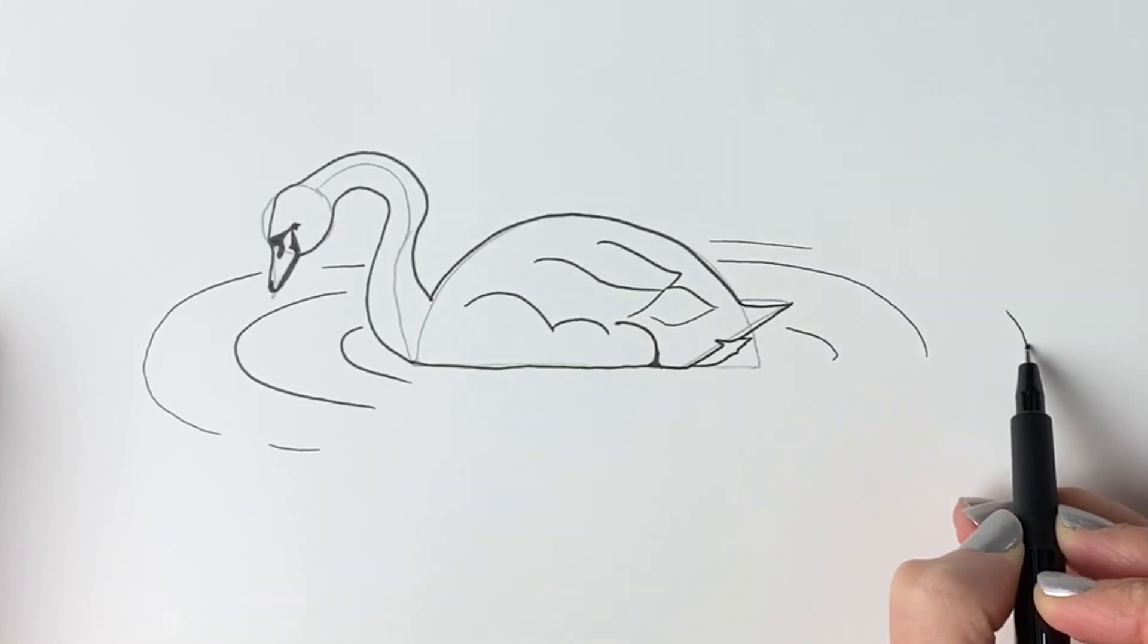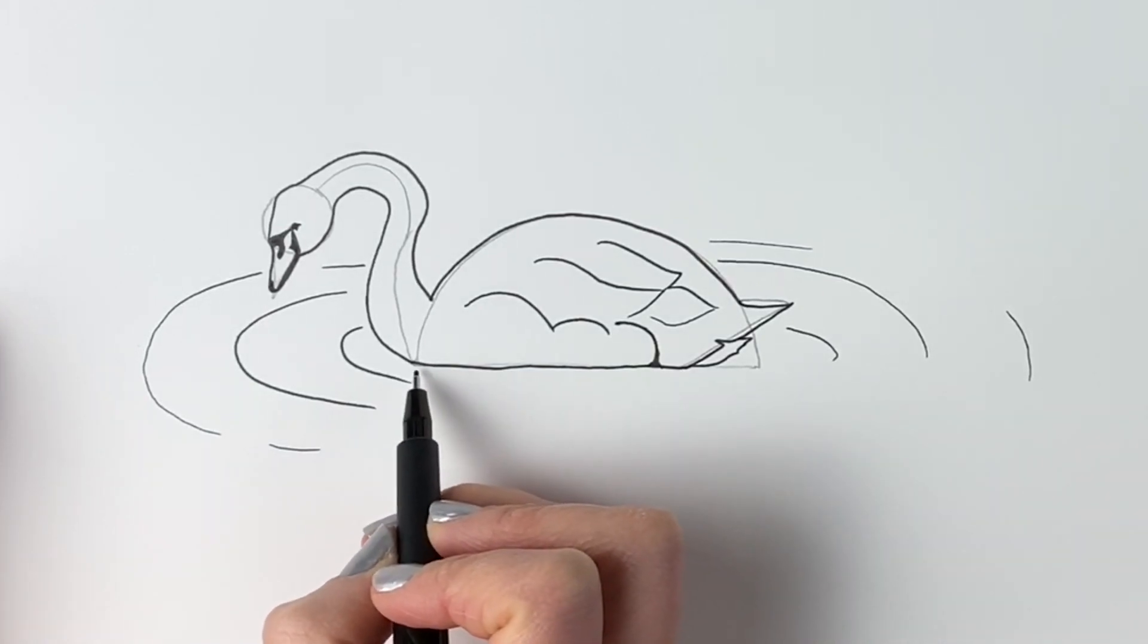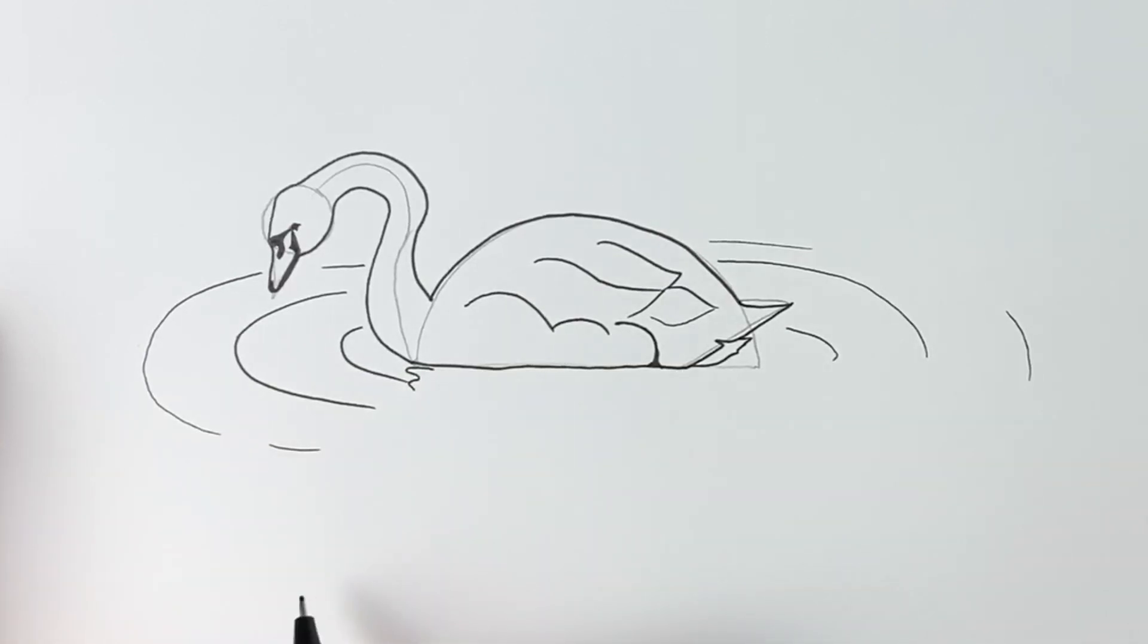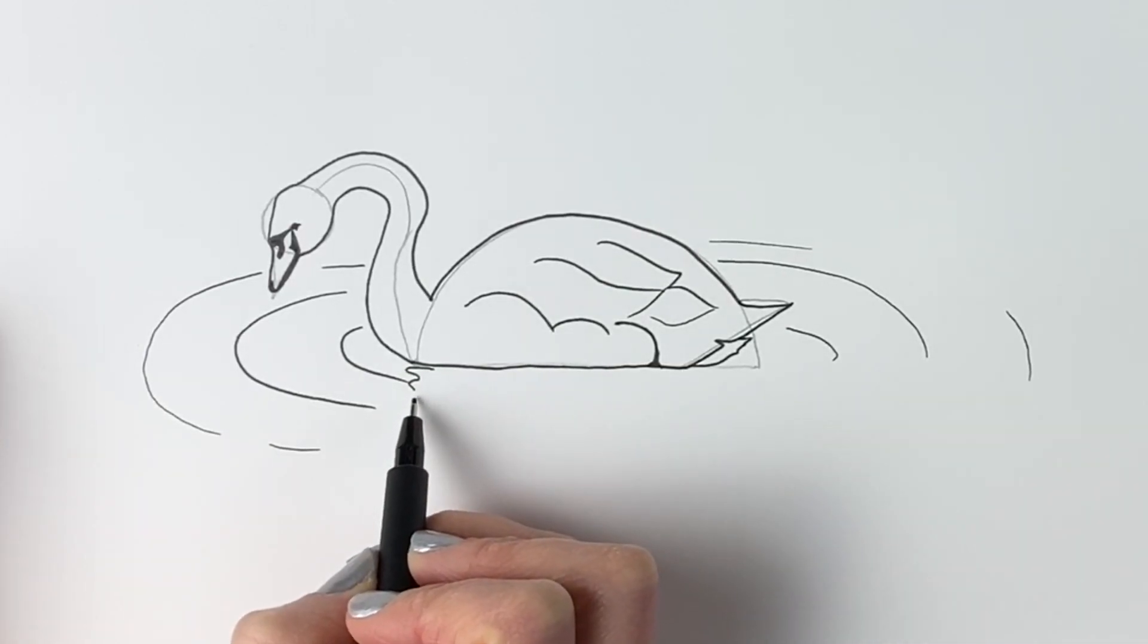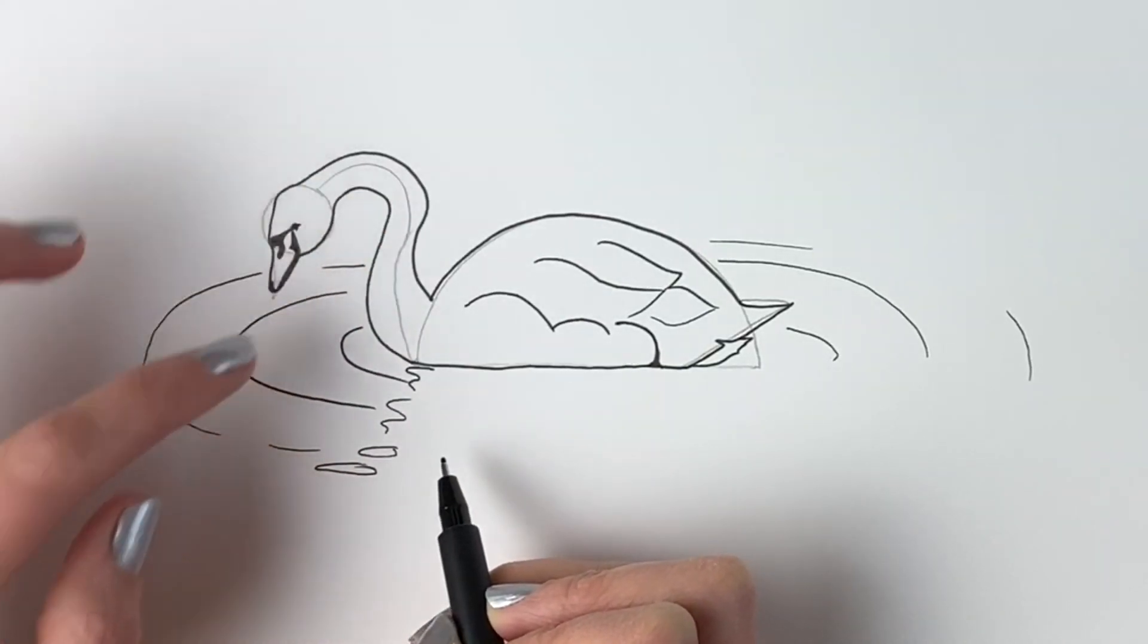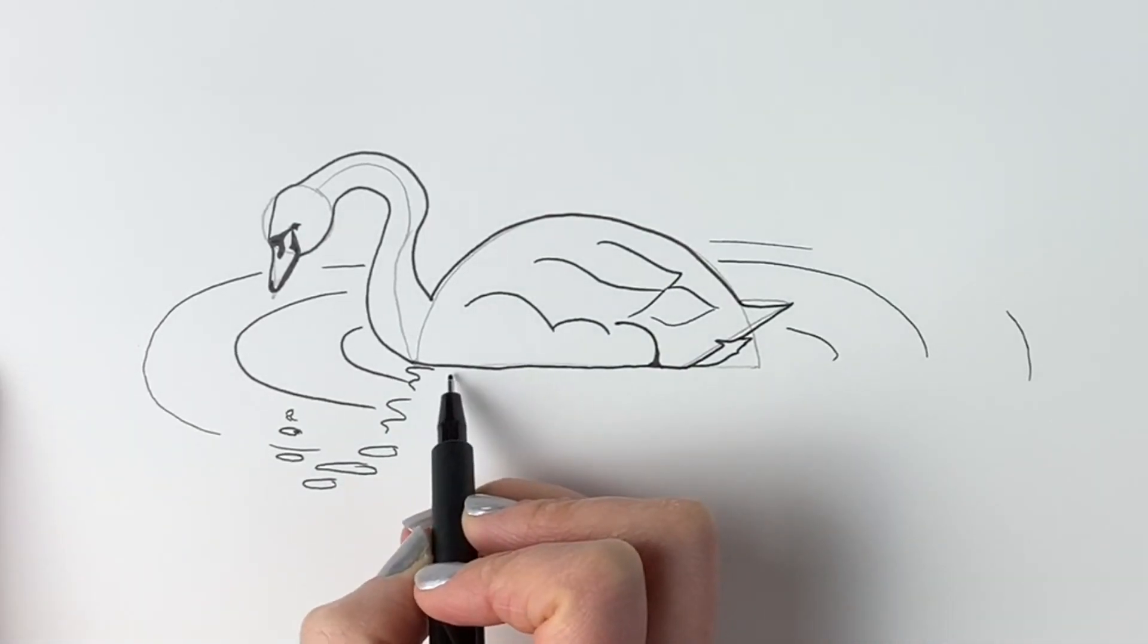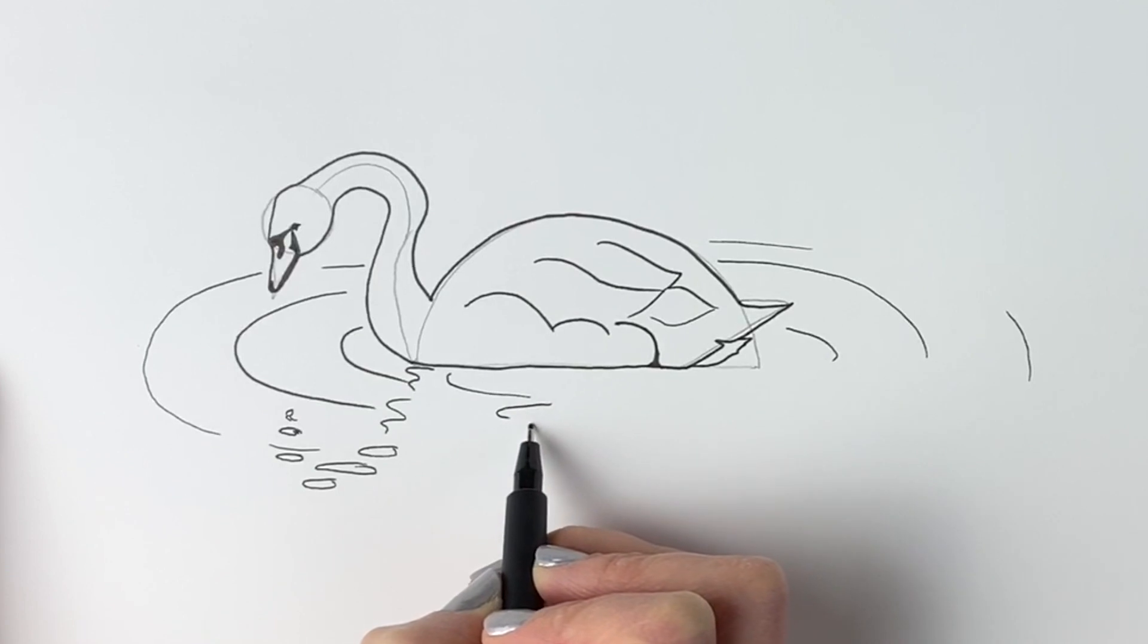Now we're going to draw the reflection of the swan in the water, so I'm just going to do this by doing a lot of wiggly lines just like that. I'm going to draw like a blob and a longer blob because this is the reflection of the upper neck. It's going to come around this side now, it's going to be the head, and then another wiggly line there.